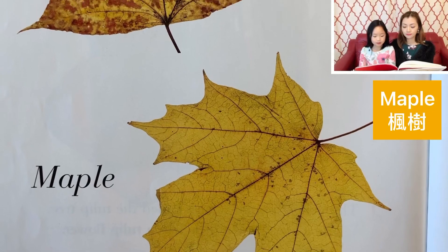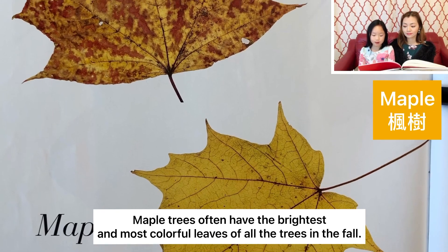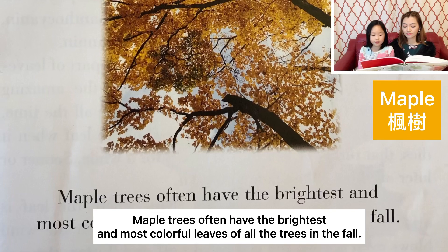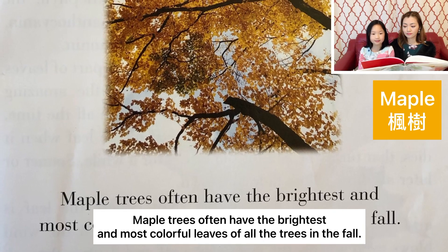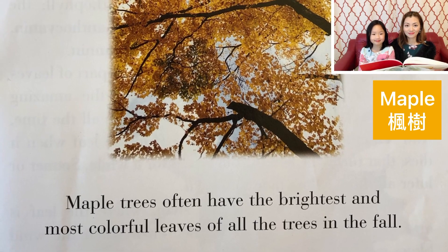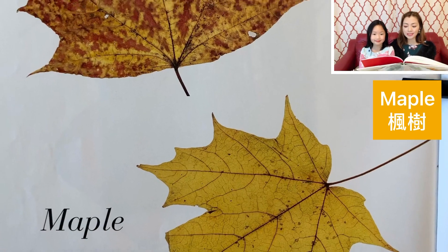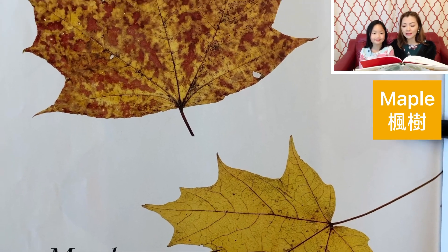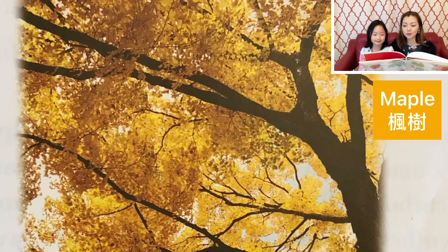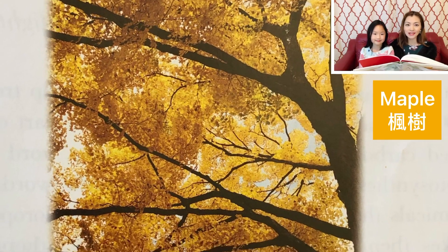Maple. Maple trees often have the brightest and most colorful leaves of all the trees in the fall. 枫树。枫树在秋天当中，在所有树当中，它的叶子是最亮也是颜色最鲜艳的。